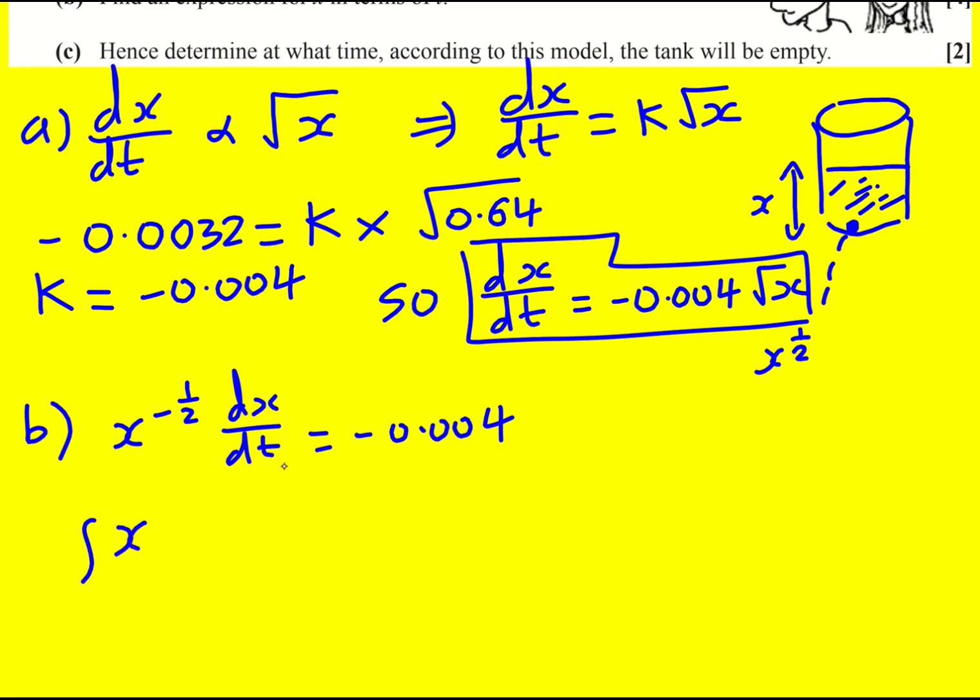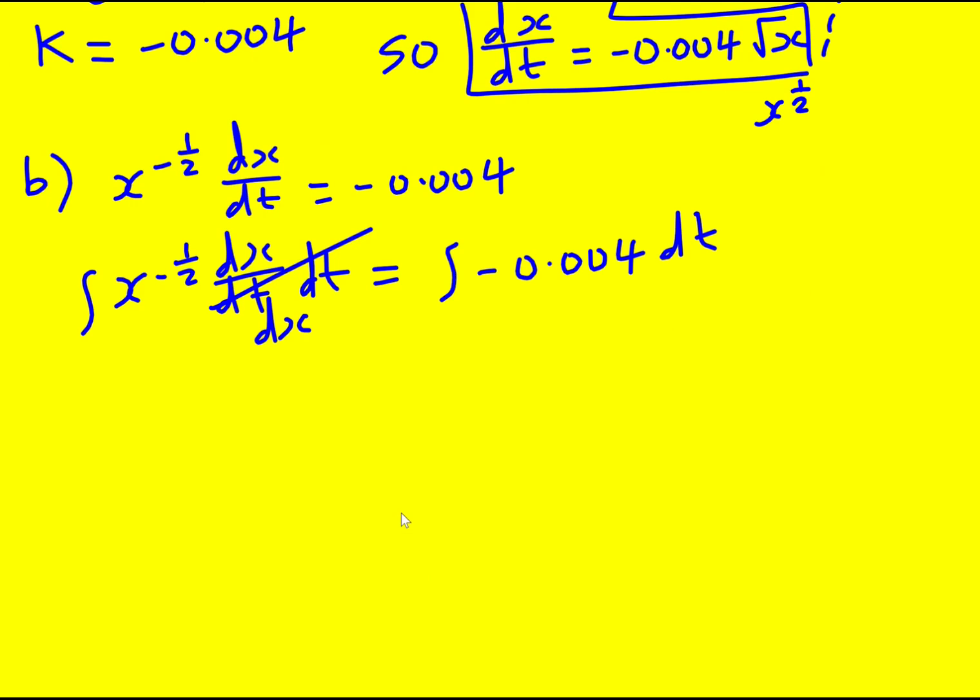I always like to do it like this. Sometimes people like to times by dt and then integrate. I always do it, I just think it's better explains why it works. Integrate both sides with respect to t. Because using the chain rule this actually becomes dx. Okay, it's the same as when you do integration by substitution. So add 1 to the power gives x to the half, divided by the new power of a half gives 2. 2x to the half is equal to minus 0.004 t plus c.